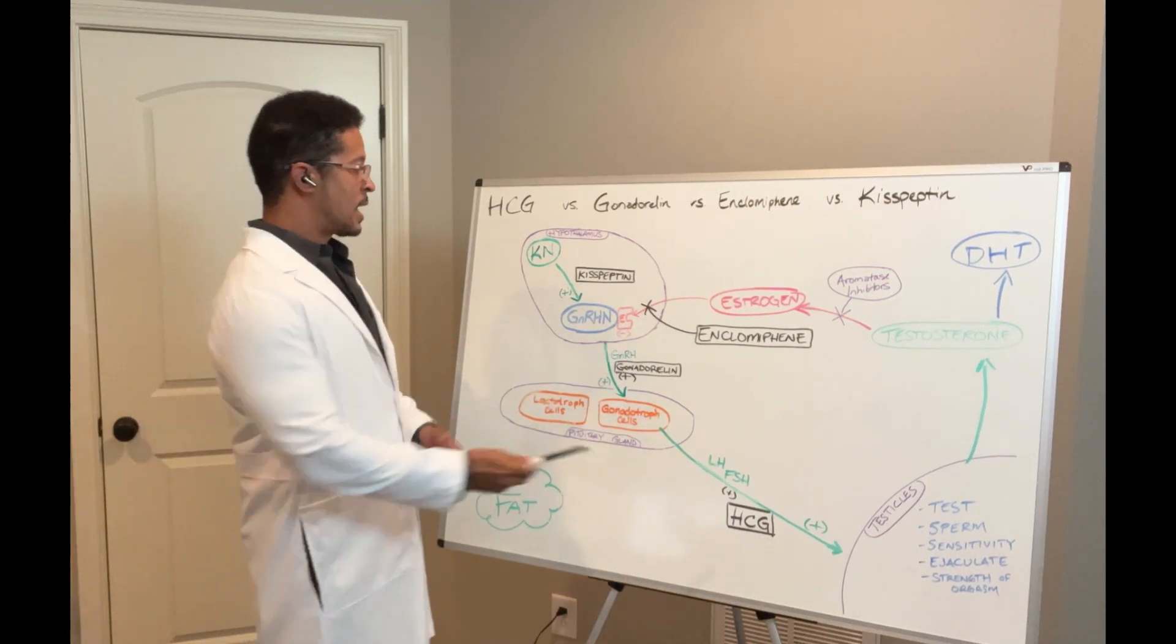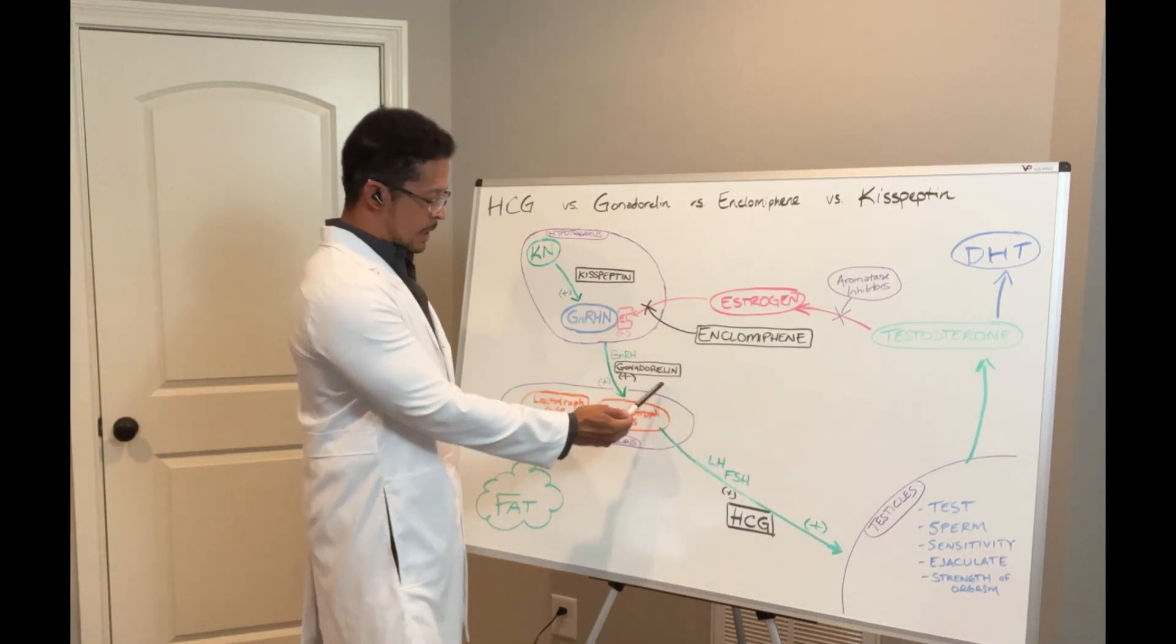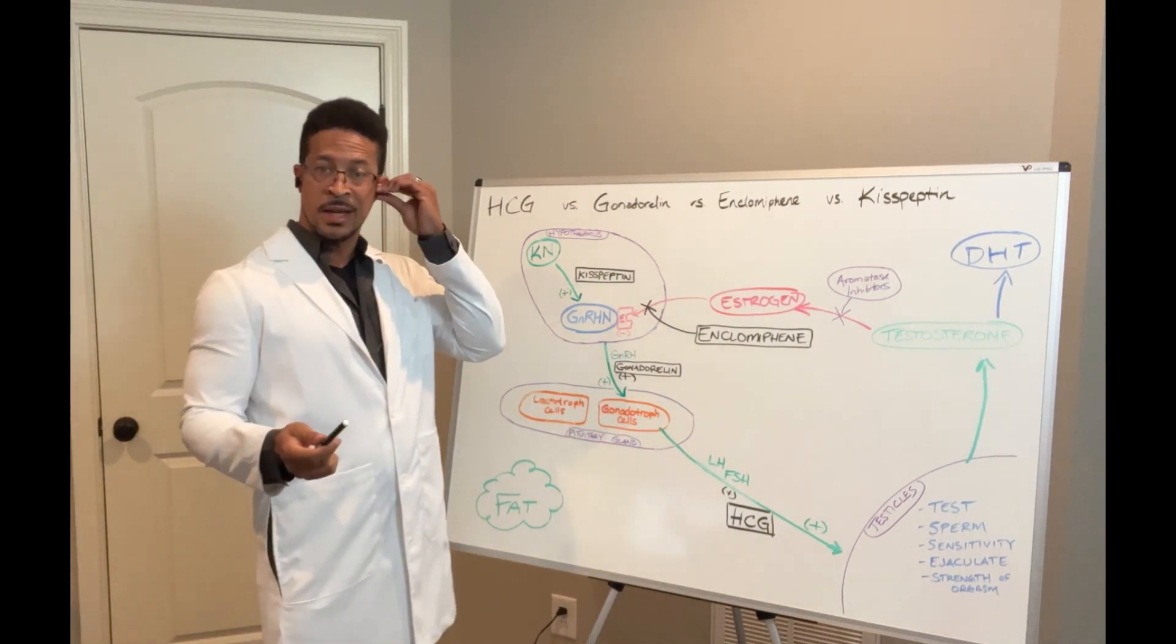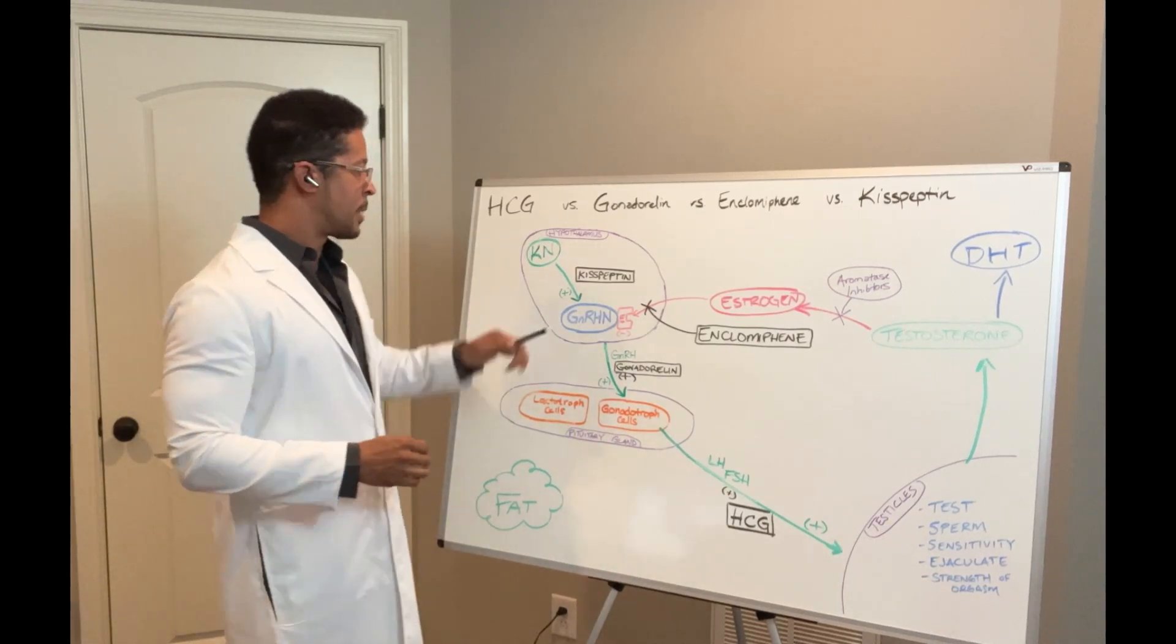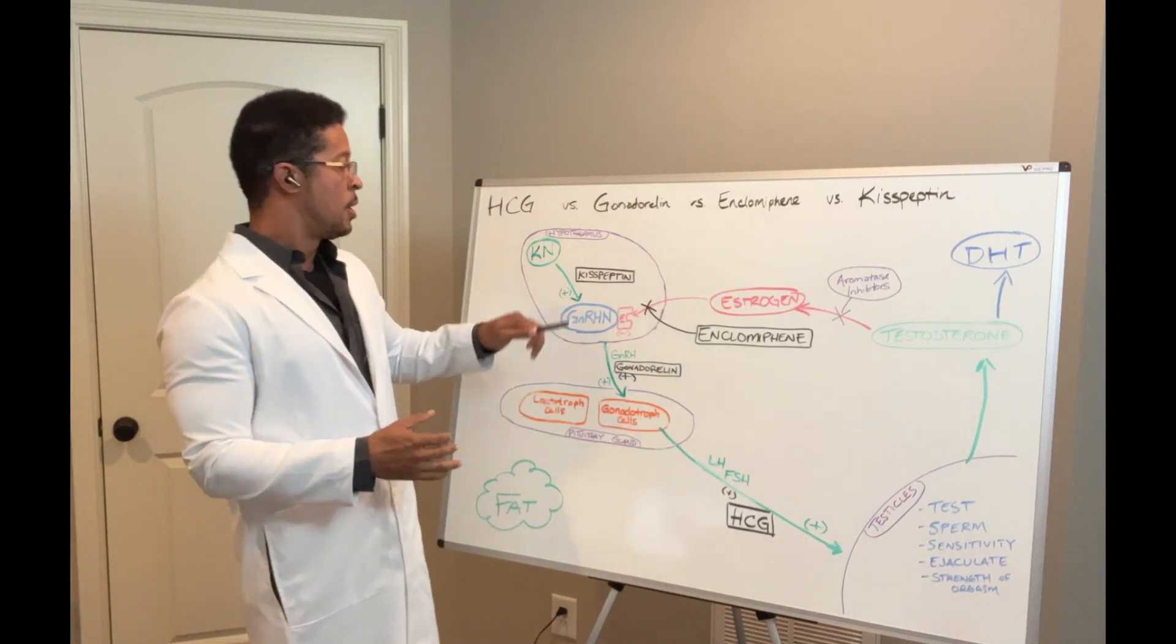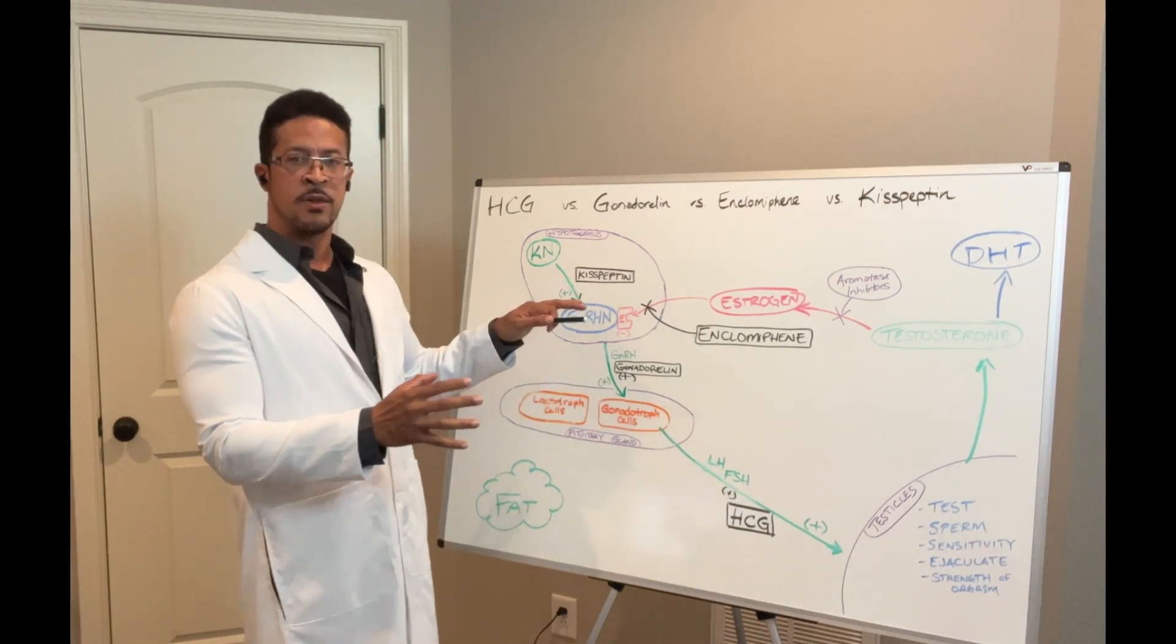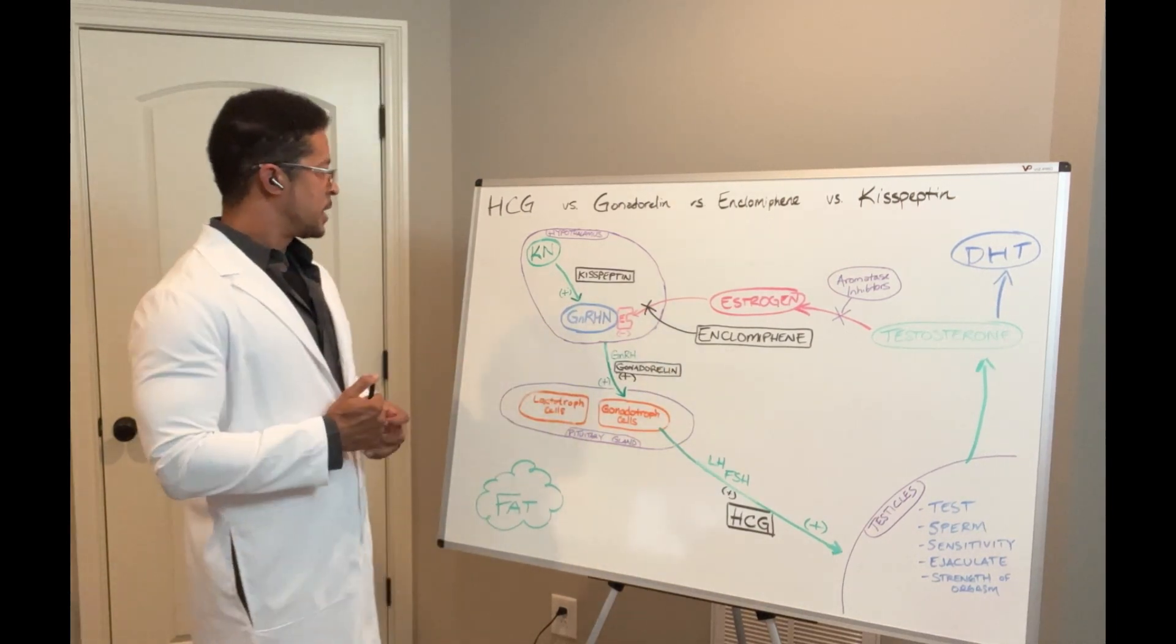The ones that I have in black, these are the medications that we're talking about. Kisspeptin, Inclomiphene, Gonadorellin, and HCG. The thing is, if you are on medically managed TRT, then there's got to be something not optimal about some part of that process. Sometimes it's difficult to determine which part of your cascade is having an issue.